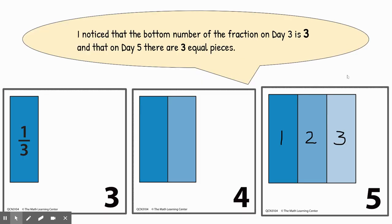Another student said, I noticed that the bottom number of the fraction on day three is three, and that on day five, there are three equal pieces. Remember, that is what that bottom number is about. It tells us how many equal pieces that whole is going to be divided into.